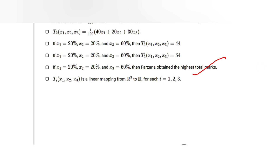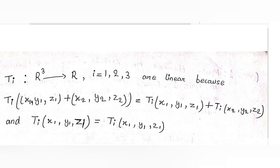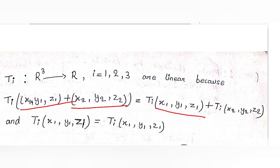For the last option, Ti belongs to R where i = 1, 2, or 3 are linear, because Ti(x1, y1, z1) + Ti(x2, y2, z2) = Ti(x1+x2, y1+y2, z1+z2) and Ti(α·x1, α·y1, α·z1) = α·Ti(x1, y1, z1), satisfying the linearity conditions.